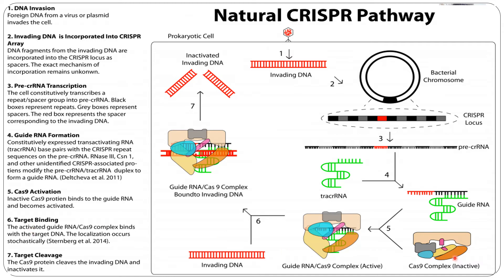The guide RNA activates the Cas9 protein by binding to it. Once the Cas9 protein is activated, the whole complex of guide RNA and Cas9 is called the Cas9 complex. This active Cas9 complex then goes to look for the invading viral DNA on a second attack. Whenever similar bacteriophages attack the bacteria again, this system recognizes the invading DNA, binds to it, and cleaves it, inactivating the viral DNA.